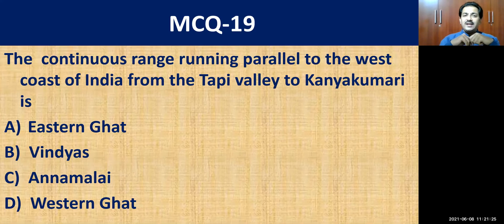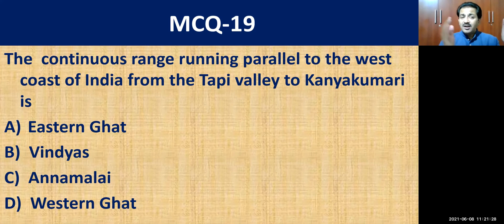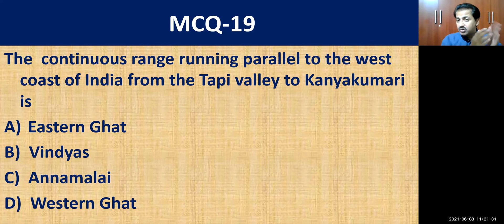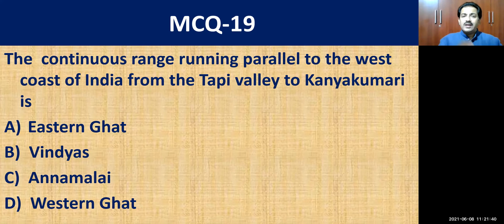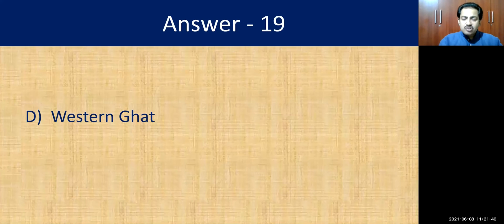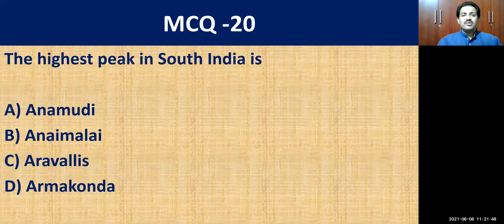MCQ question number nineteen: the continuous range running parallel to the west coast of India. The west coast runs from Gujarat to Kanyakumari — from the Tapi Valley to Kanyakumari. The correct answer is the Western Ghats.